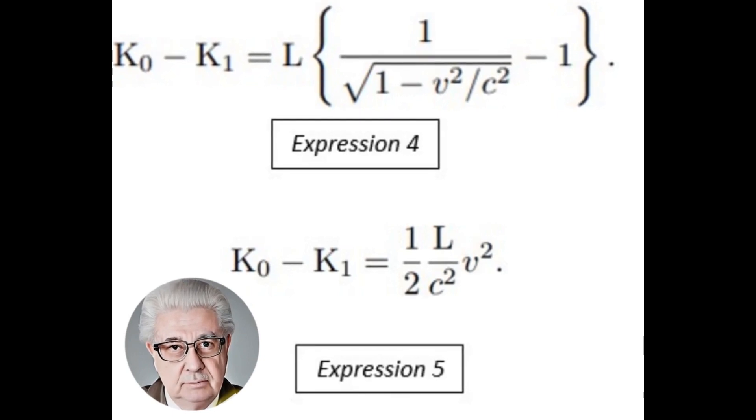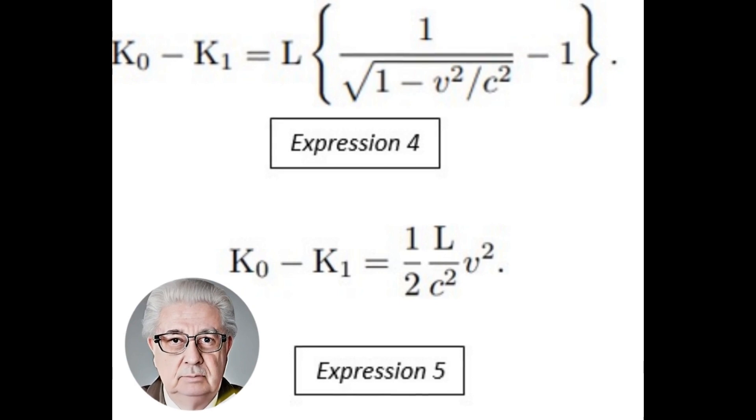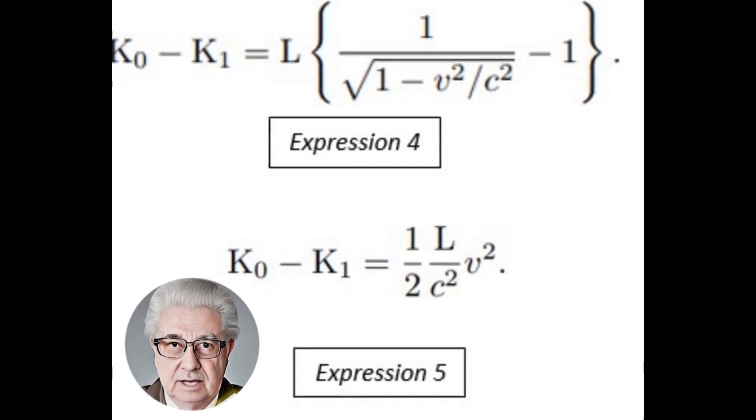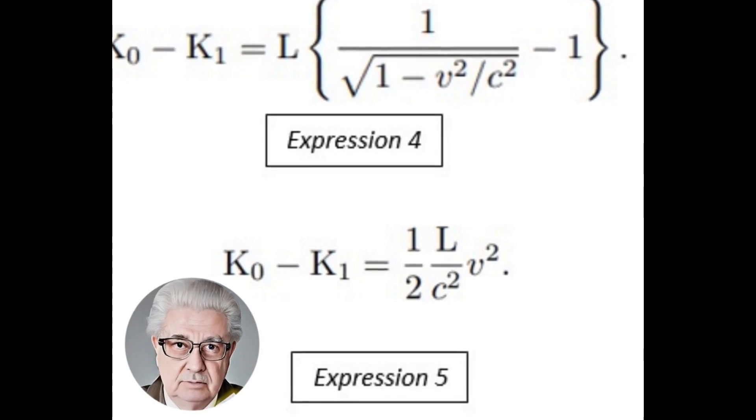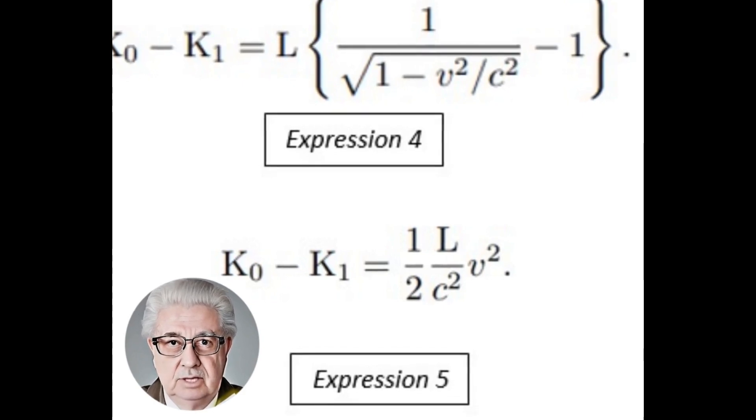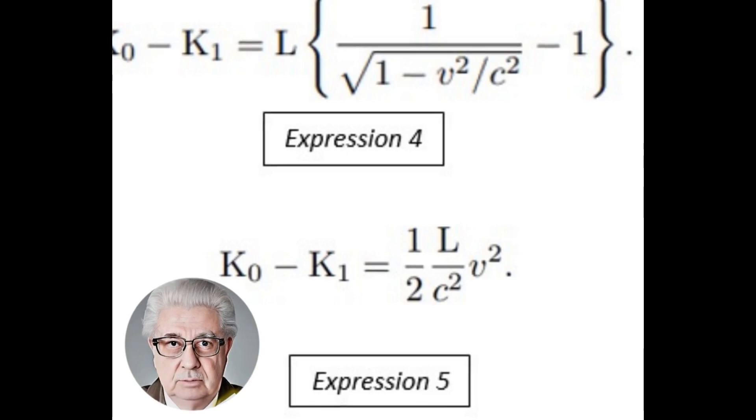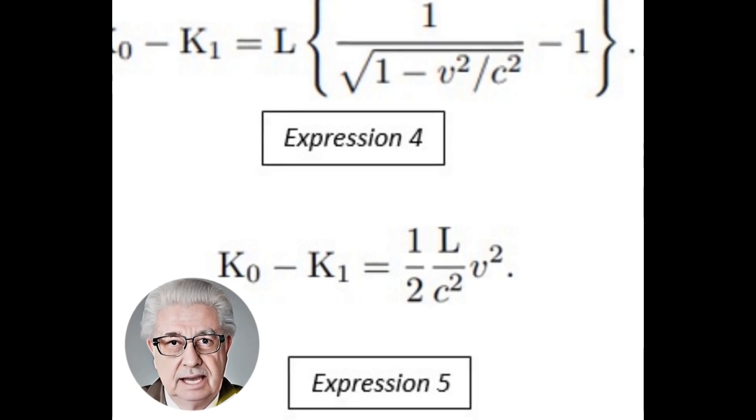The decrease in kinetic energy is obtained by subtracting the kinetic energy before emission K0 and after emission K1. The amount of decrease is given by the product of the energy of the emitted light L and a function that depends on the speed of the body with respect to light and the direction in which the light is emitted.